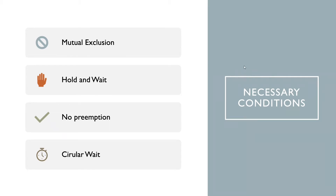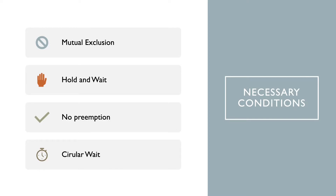So far we've seen what a deadlock is and had a basic understanding of it. Now let's see the necessary conditions for when interactions between processes can turn into deadlocks. There are four necessary conditions: first is mutual exclusion, second is hold and wait, third is no preemption, and the fourth is circular wait. We will go through each of them briefly.